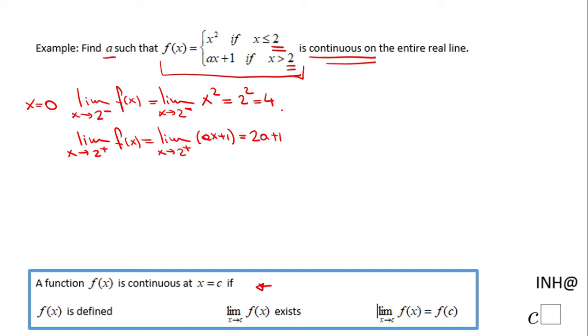So 2a plus 1 equals 4, and that will allow us to find a. Then we have 2a equals 3, or a equals 3/2. That's it. This is the value of a for which this function is continuous on the entire line.